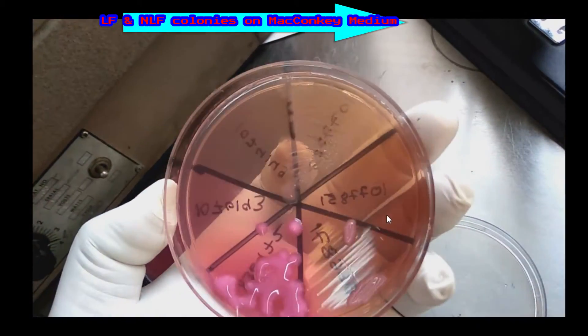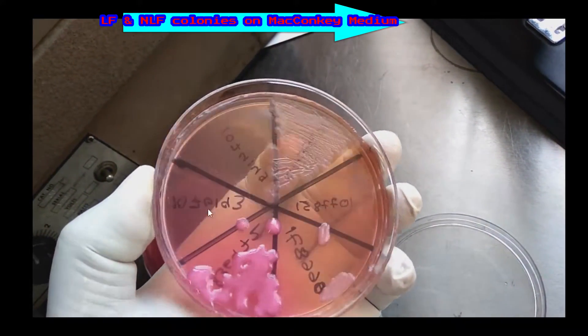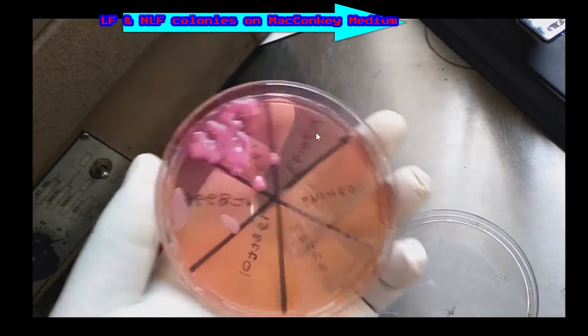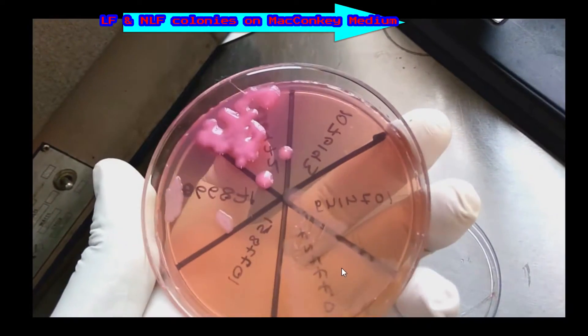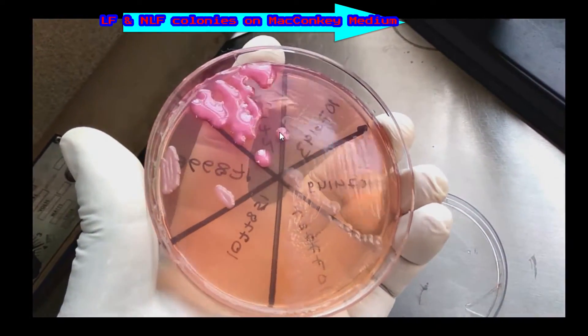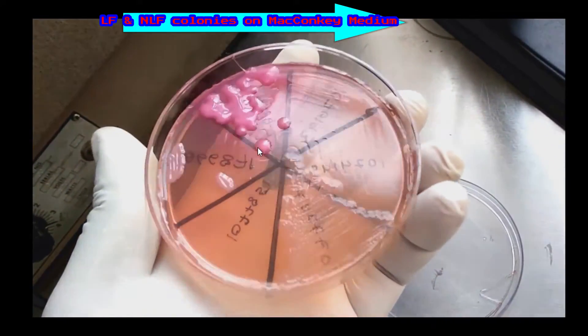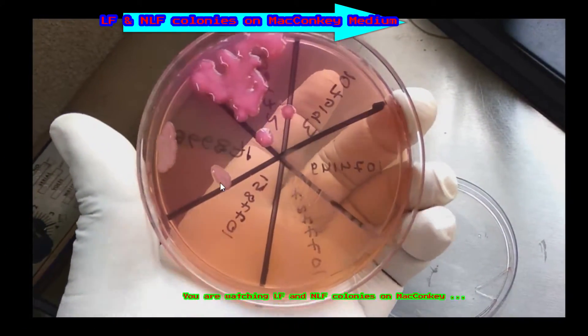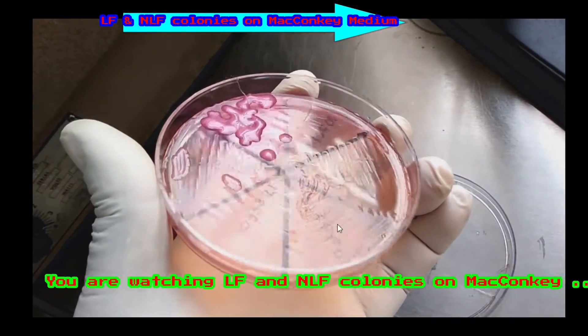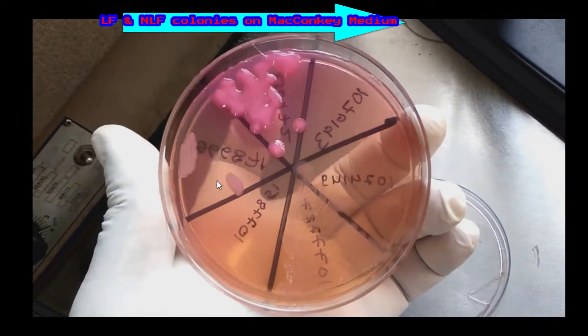The medium becomes like this if the organism is growing. Here you can see the lactose fermenter colonies. Here you can see pink in color. Here are very pale pink and colorless colonies, so they are non-lactose fermenters.